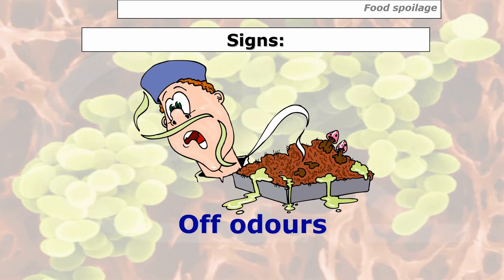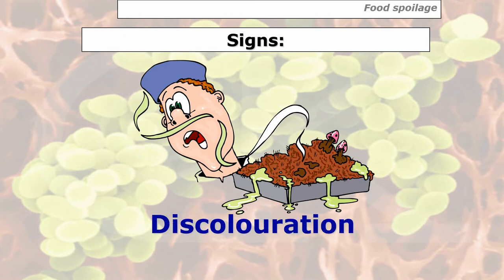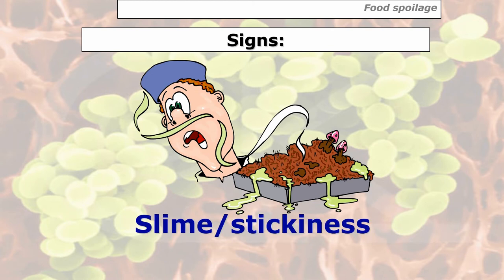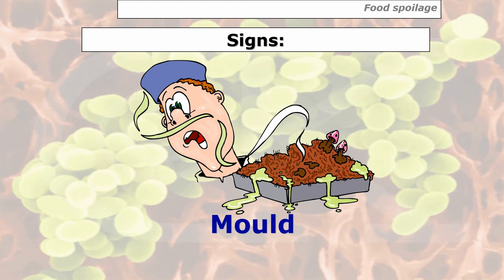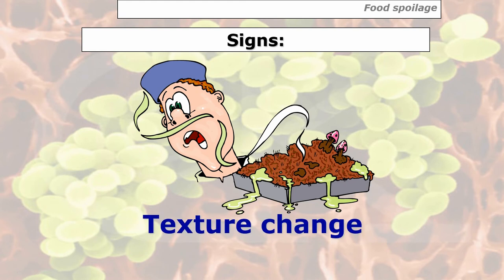The signs of food spoilage bacteria include: off odors — an unusual smell; discoloration — you may have seen on pre-packaged meat coming up to the use-by date that the color starts to change, the lamb looks a bit green and the beef looks a bit black, caused by spoilage bacteria; slime or stickiness; mold growth; and texture change, where the food becomes more spongy as yeasts or spoilage bacteria produce pockets of gas.